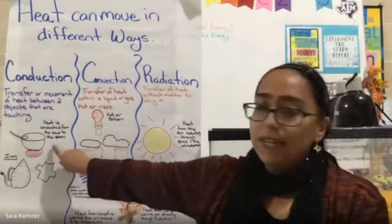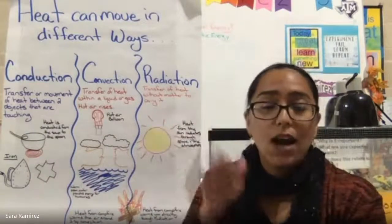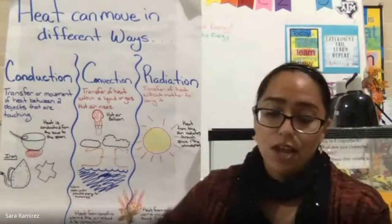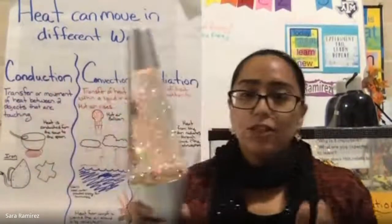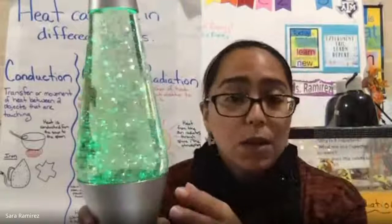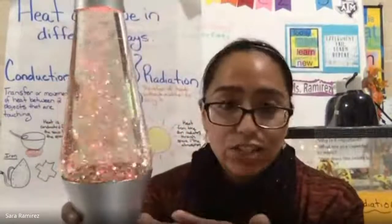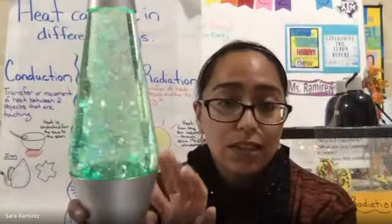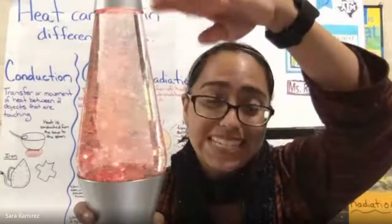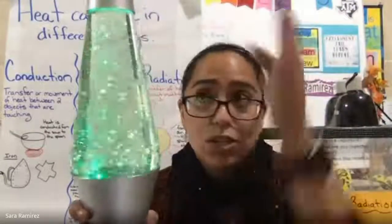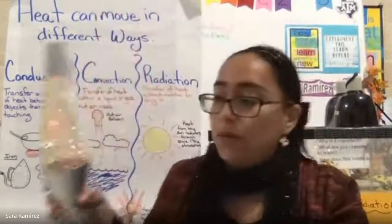Common examples of conduction at home include a hot pan touching the coils on the stovetop, or a hot iron coming in contact with your clothes. Another method of heat transfer is convection. In a lava lamp, a bulb transfers electrical energy to heat energy, heating the liquid inside. When things get hot, they rise because they become less dense. At the top, further from the heat source, they cool and become more dense, then sink — creating constant movement.